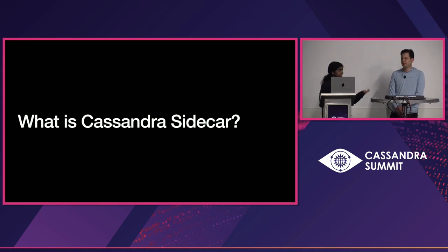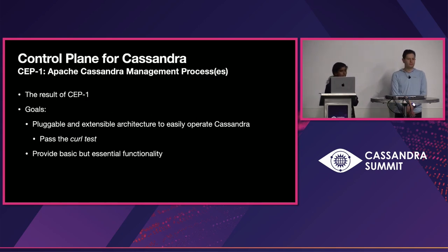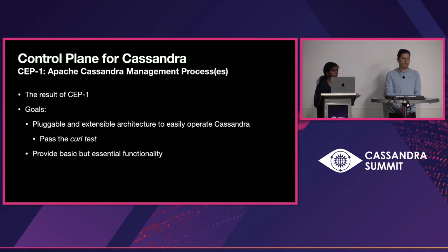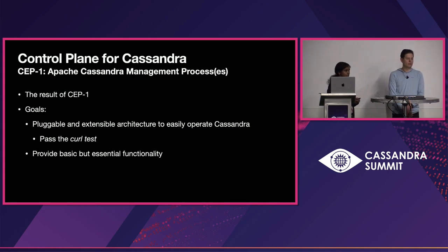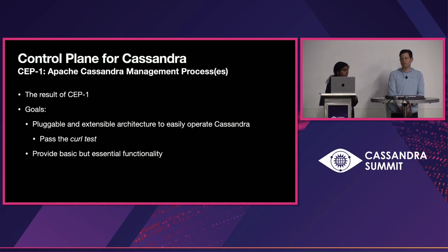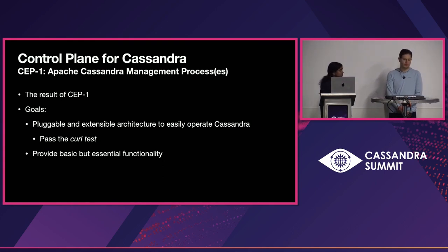Cassandra Sidecar is a control plane that has been introduced for managing the Cassandra database. It is a separate JVM process that runs alongside Cassandra. To run Cassandra out of the box with zero configuration, we need a control plane that provides essential functionality.